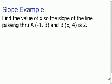We are going to go over an example where you are given the slope of a line and you're given one of the points that the line passes through, but you're missing one of the coordinates of the other point that the line passes through.